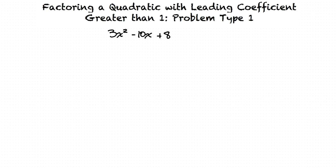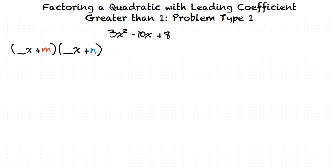When we factor this, the two factors will be two binomials in the form: blank x plus m, times blank x plus n. After arriving at our two factors, if we multiplied them back out, the result would be our original quadratic, 3x squared minus 10x plus 8. So we need to figure out what our blanks are, and our m and our n.